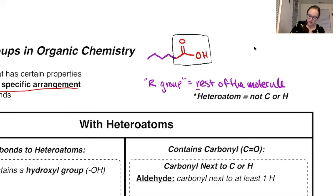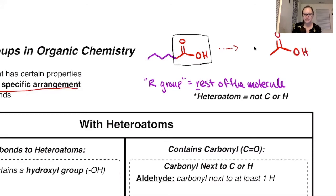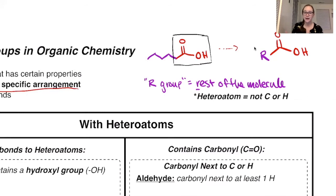R stands for 'rest.' For example, looking at the molecule drawn above — where we have the purple carbon chain and then the red reactive portion — if I want to redraw this molecule focusing specifically on the functional group in the box, I put my functional group first, then off of it I put R, which represents the rest of the carbon chain — the rest of the molecule I'm not showing.